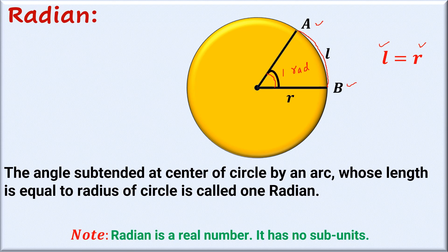Unlike degree, which has subunits — minutes and seconds — radian is a real number and it has no subunits.